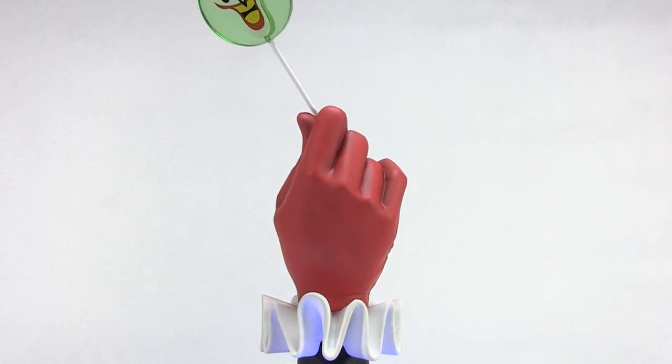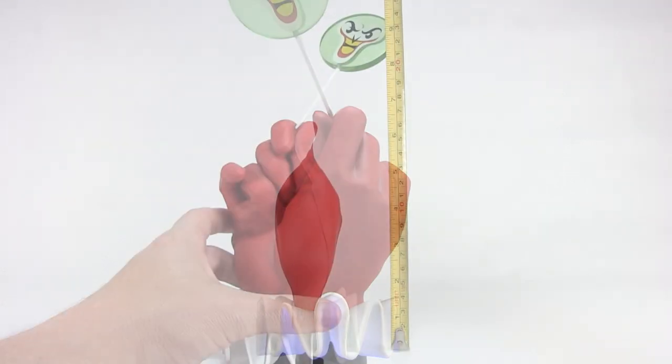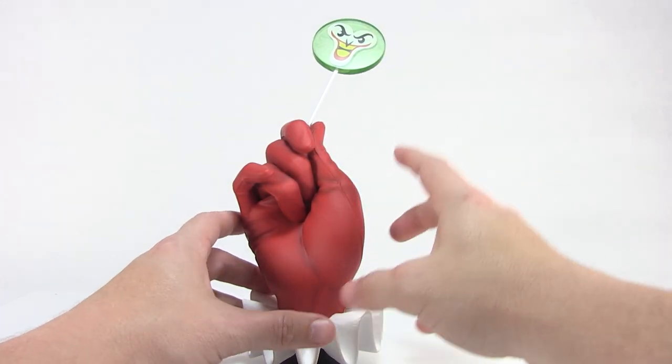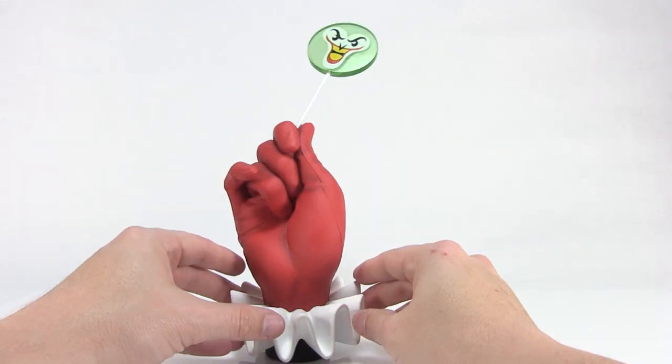And here, we've got the full thing assembled. So you can see that it actually goes almost up to a full 10 inches once you've got that lollipop positioned in the hand.